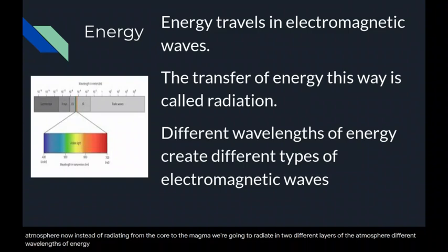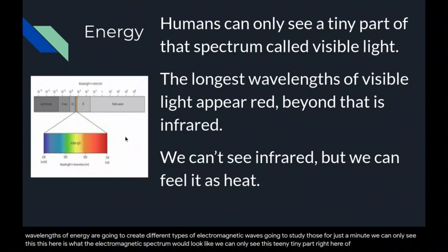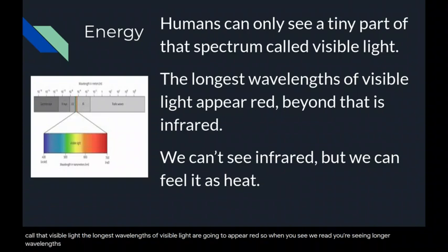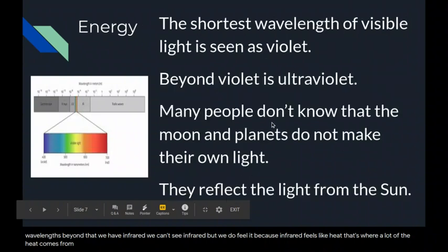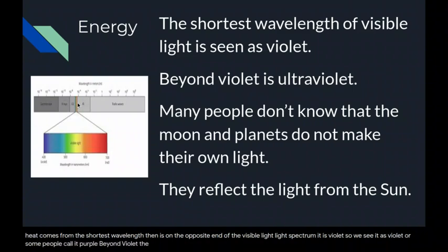Different wavelengths of energy create different types of electromagnetic waves. Here is what the electromagnetic spectrum looks like. We can only see this tiny part of that spectrum, and we call that visible light. The longest wavelengths of visible light appear red. Beyond that, we have infrared — we can't see infrared, but we feel it because infrared feels like heat. The shortest wavelength is on the opposite end of the visible light spectrum; it appears violet. Beyond violet, the next one is ultraviolet.